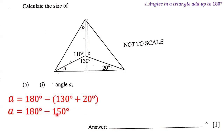When we do the subtraction, 180 degrees minus 150 degrees is equal to 30 degrees. So the size of angle A is 30 degrees.